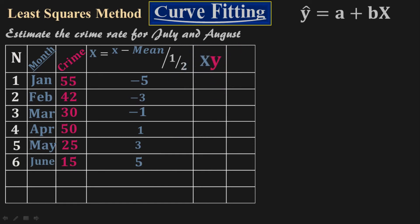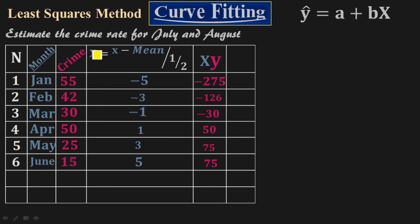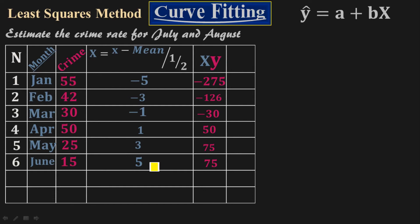Now add a column Capital X times Y — just take the product of Capital X and Y. The crime values are in the Y column and the months are the X column, but we use Capital X. So: 55 × (−5) = −275, 42 × (−3) = −126, 30 × (−1) = −30, 50 × 1 = 50, 25 × 3 = 75, 15 × 5 = 75.